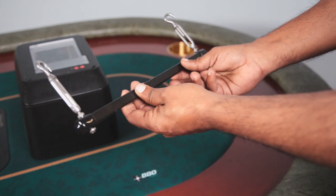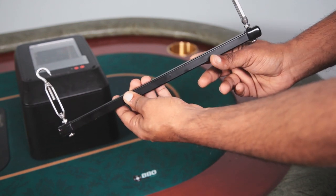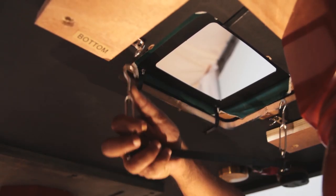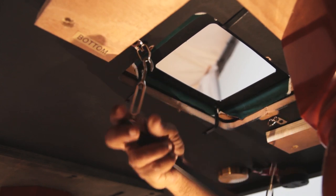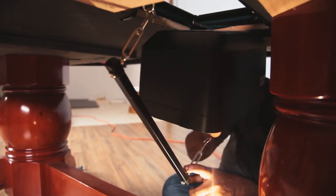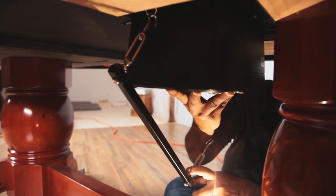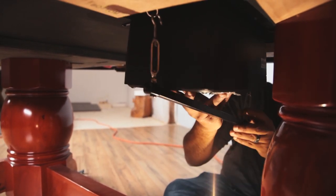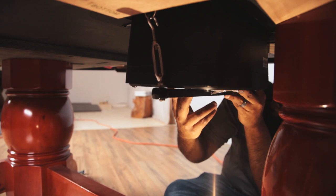Now you're going to need to get underneath your table. You'll start by attaching the hook to one side like this. Next you'll grab your shuffler unit and hold it up into the hole. Grab the other hook from the beam and attach it to the other hook underneath your table.